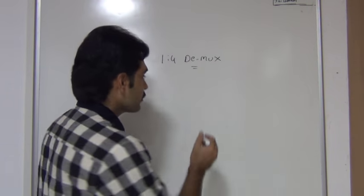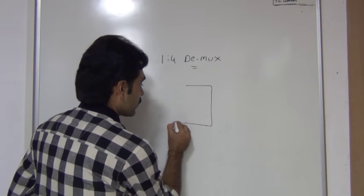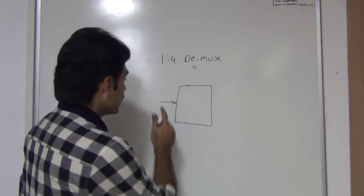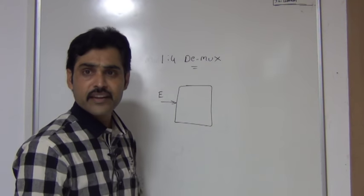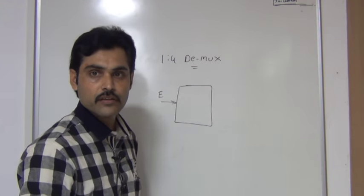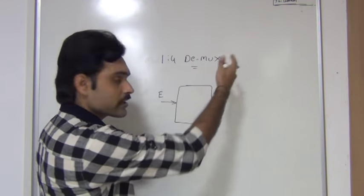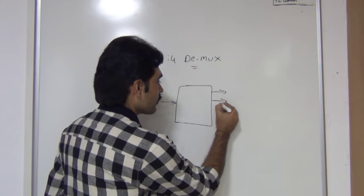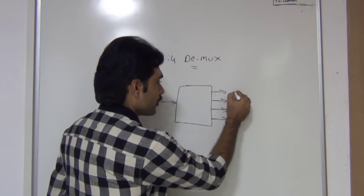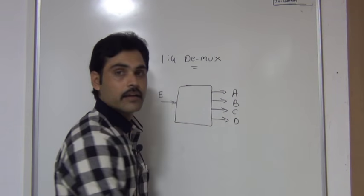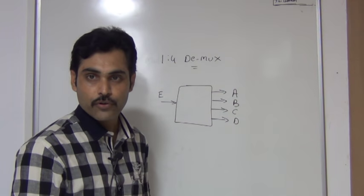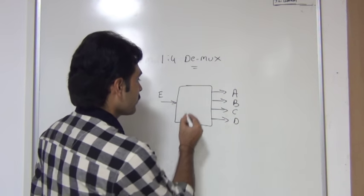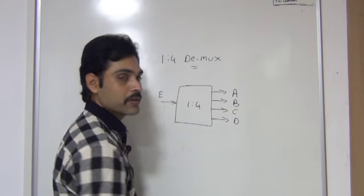This 1-to-4 demultiplexer consists of one single input. This input I am calling as E. E indicates enable — the input should always be on. If the input is on, then only it can be transferred to the output. The outputs I am taking are 4, labeled ABCD. Input is only one, that is E. Outputs are 4 outputs: ABCD. This is a 1-to-4 demultiplexer.